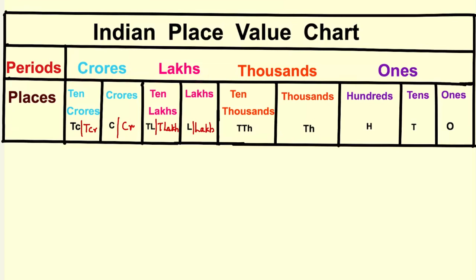The ones period is divided into three places: ones, tens, and hundreds. The thousands period is divided into thousands and ten thousands. The lakhs period into lakhs and ten lakhs. And the crores period into crores and ten crores.